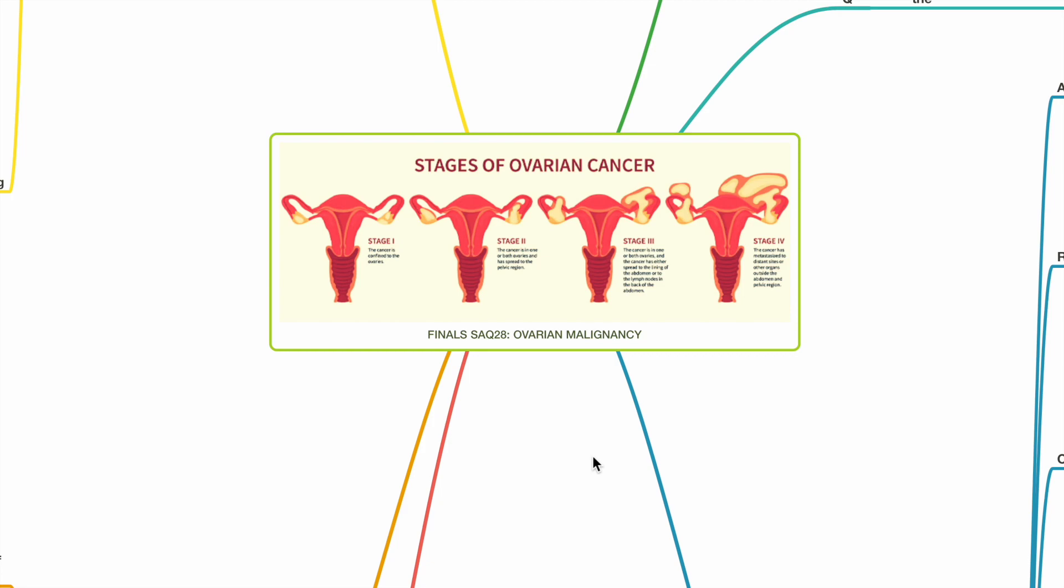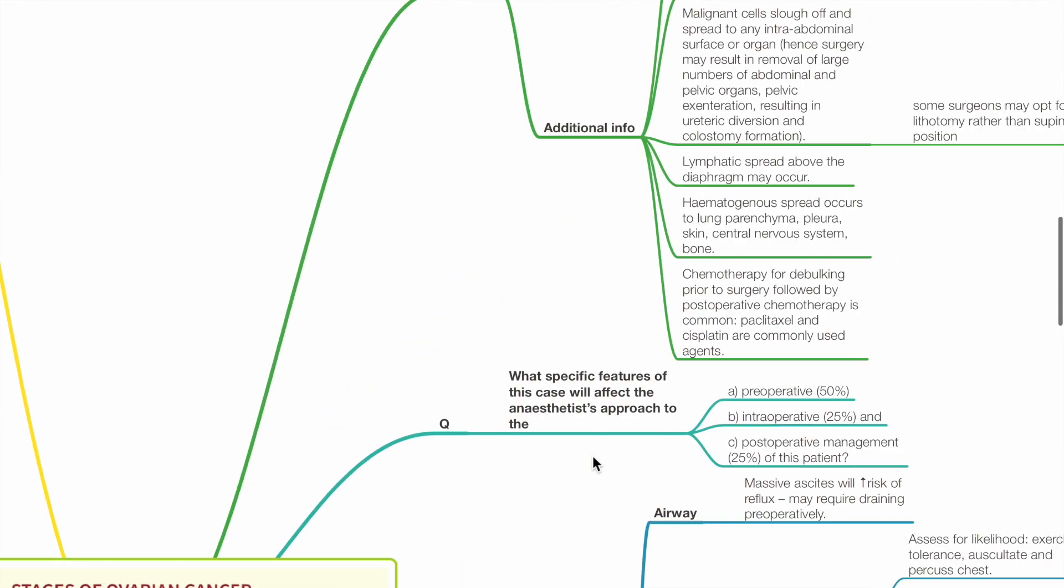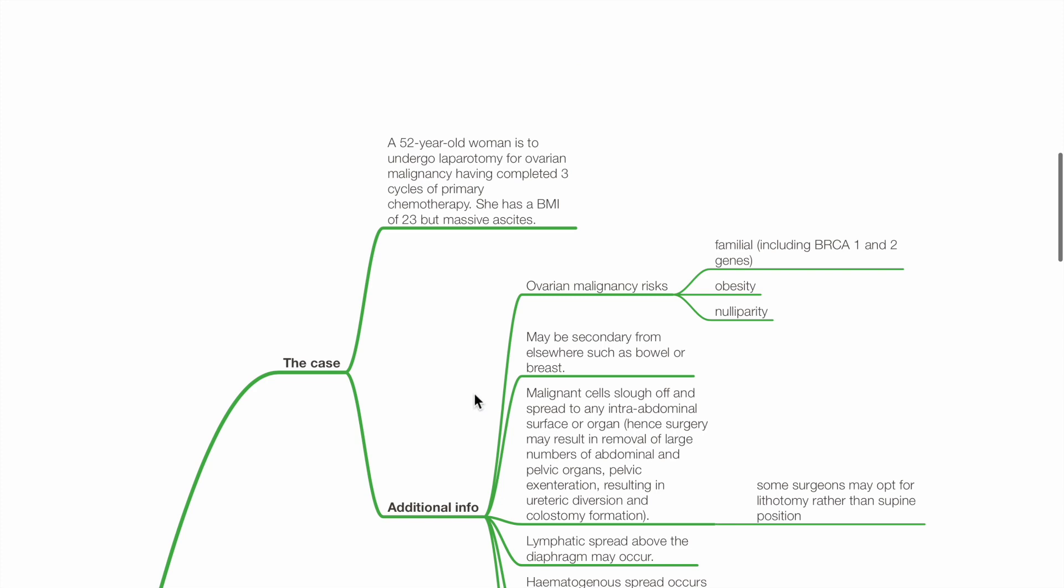Finals SAQ 28, Ovarian Malignancy. The case: A 52-year-old woman is to undergo laparotomy for ovarian malignancy, having completed 3 cycles of primary chemotherapy. She has a BMI of 23 but massive ascites.